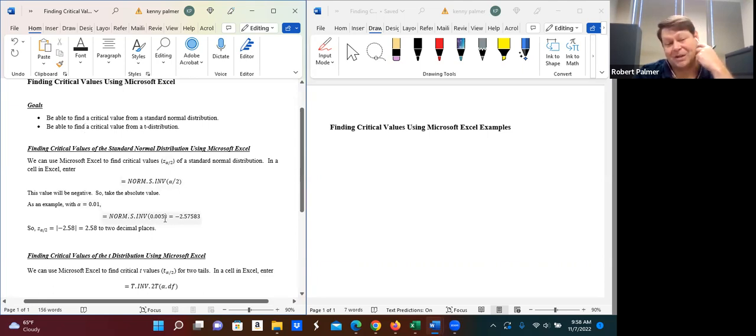Now, when you do this, what you're going to get is actually going to be a negative number. Then just take the absolute value of that, and then round off to whatever number of decimal places you need. That will give you your value.